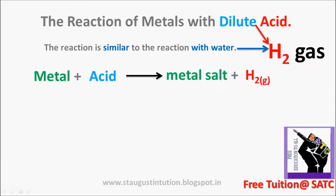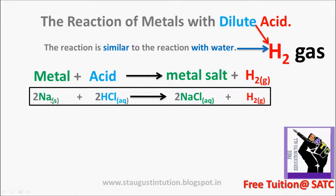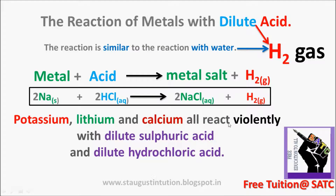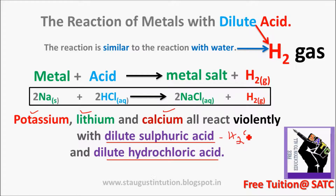It is very important: a metal reacts with the acid to form metal salt plus hydrogen. For example, sodium reacts with hydrochloric acid to form sodium chloride plus hydrogen. Potassium, lithium, and calcium all react violently, similar to sodium and calcium with dilute sulfuric acid and dilute hydrochloric acid.